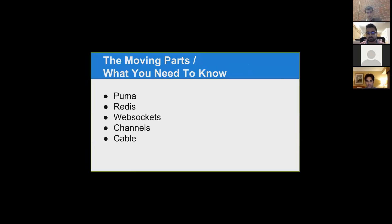So, the moving parts. Right now you have to use Redis basically as a middleman. Puma is going to be your web server that handles the processing of incoming and outgoing. And then WebSockets — and then the channels will be your publish and subscription mechanism. And then Action Cable itself.